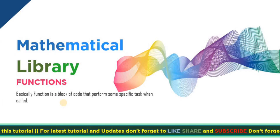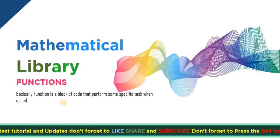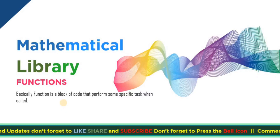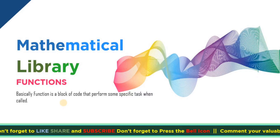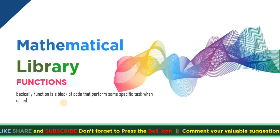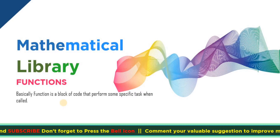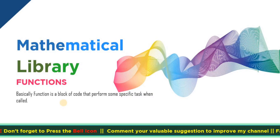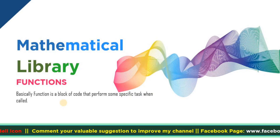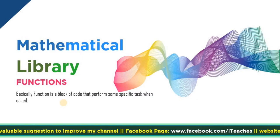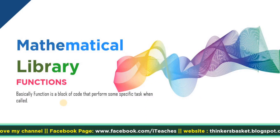Basically, a function is a block of code that performs some specific task when called. To understand this, consider you want to perform an addition. You need to write a block of code and save it under a name. Whenever you require that particular code, you simply call that name. That name we can consider as a function, which performs the action on that code and finally produces a result.